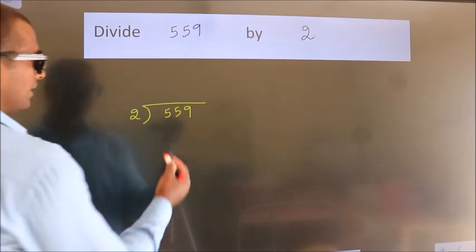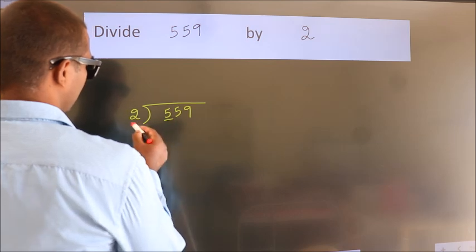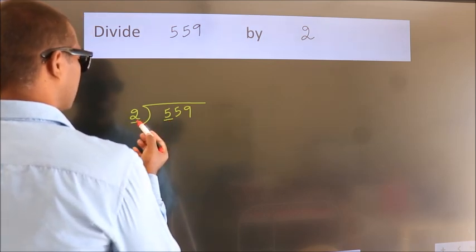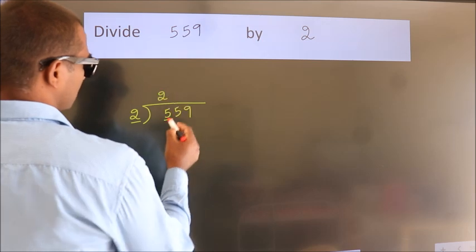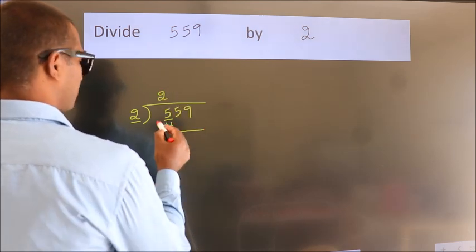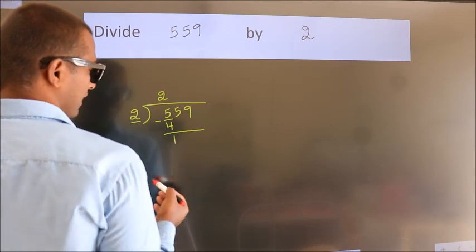Next, here we have 5, here 2. A number close to 5 in 2 table is 2 2's, 4. Now, we should subtract. We get 1.